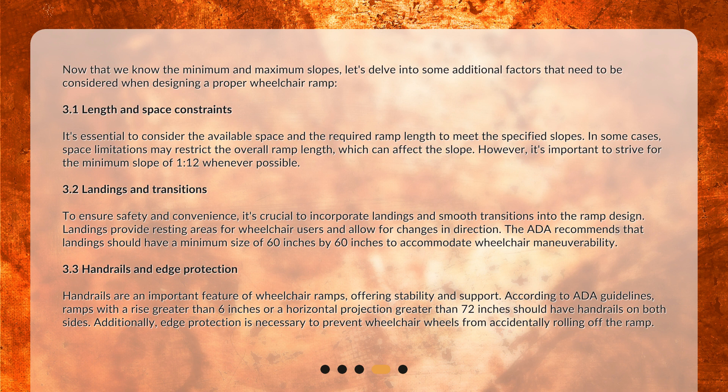3.2 Landings and Transitions: To ensure safety and convenience, it's crucial to incorporate landings and smooth transitions into the ramp design. Landings provide resting areas for wheelchair users and allow for changes in direction. The ADA recommends that landings should have a minimum size of 60 inches by 60 inches to accommodate wheelchair maneuverability. 3.3 Handrails and Edge Protection: Handrails are an important feature of wheelchair ramps, offering stability and support. According to ADA guidelines, ramps with a rise greater than 6 inches or a horizontal projection greater than 72 inches should have handrails on both sides. Additionally, edge protection is necessary to prevent wheelchair wheels from accidentally rolling off the ramp.